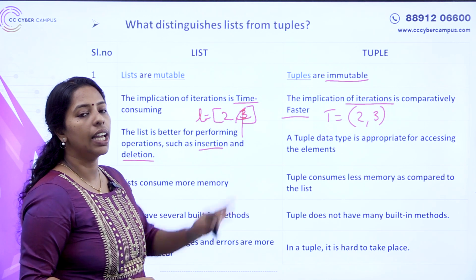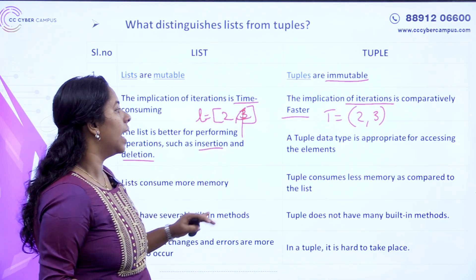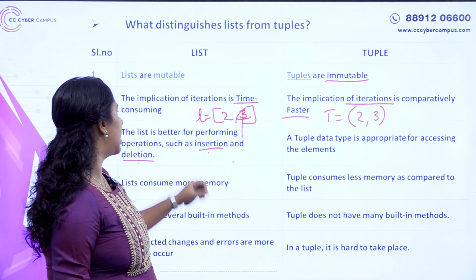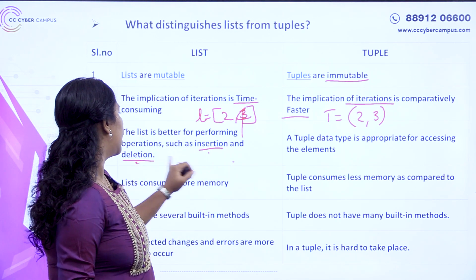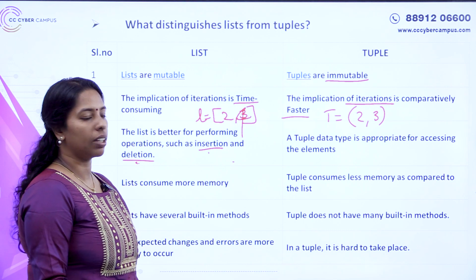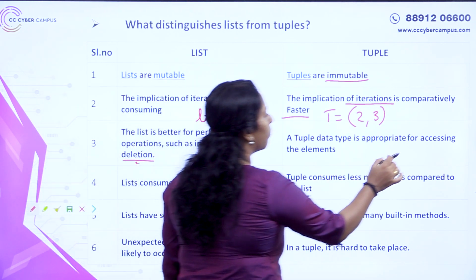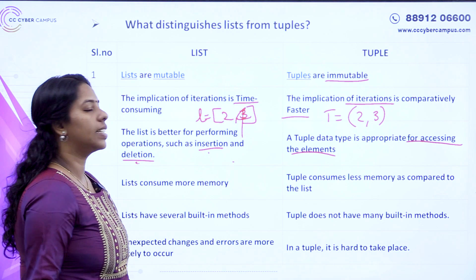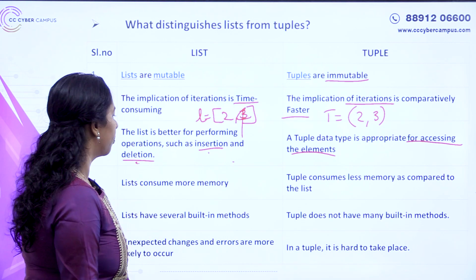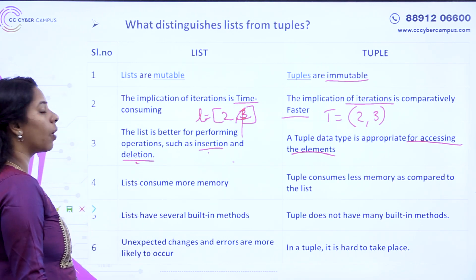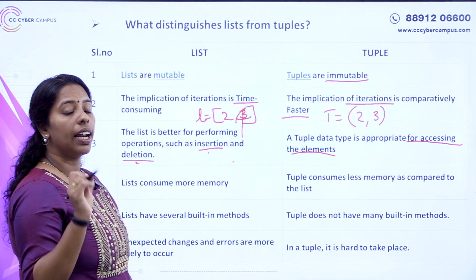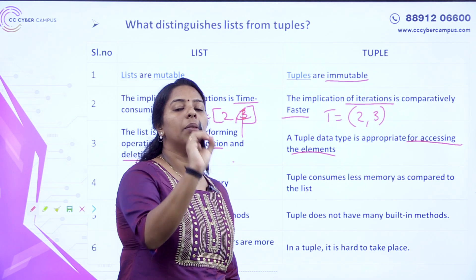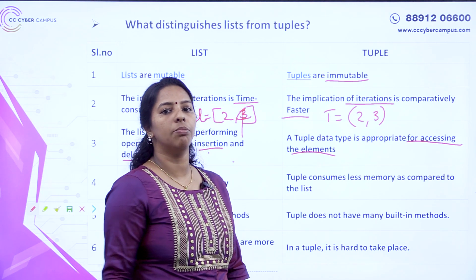Because a tuple is immutable, when we call it immutable we will not have insertion and deletion operations. But the list is better for doing insertion and deletion. We can also work with accessing elements. Lists consume more memory because we need to insert many elements.